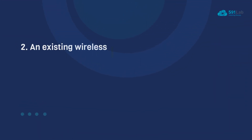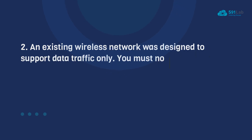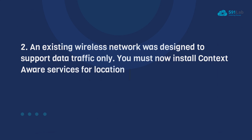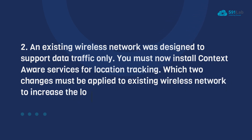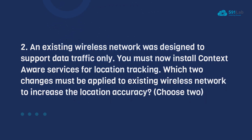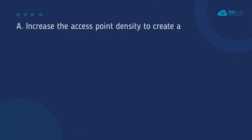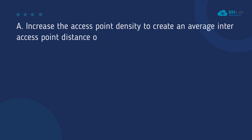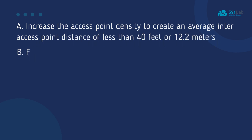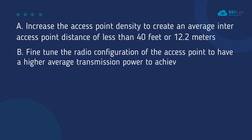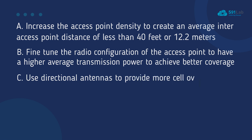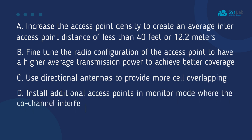Question 2: An existing wireless network was designed to support data traffic only. You must now install context-aware services for location tracking. Which two changes must be applied to the existing wireless network to increase location accuracy? Choose two. A. Increase the access point density to create an average inter-access point distance of less than 40 feet (12.2 meters). B. Fine-tune the radio configuration of the access point to have a higher average transmission power to achieve better coverage. C. Use directional antennas to provide more cell overlapping. D. Install additional access points in monitor mode where co-channel interference would otherwise be affected.